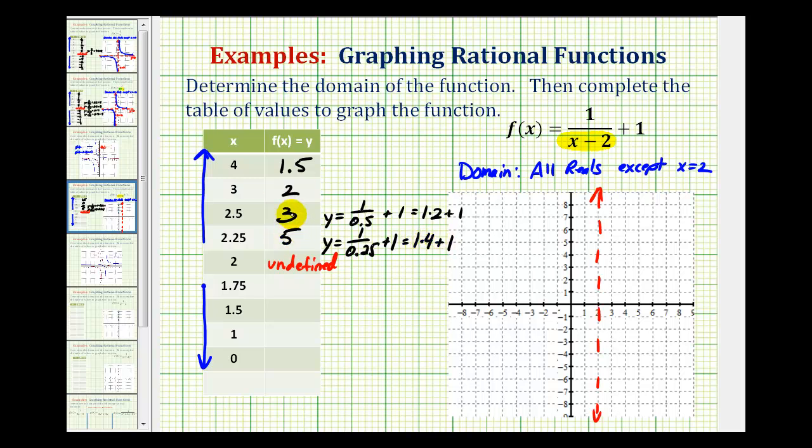And now when x is 1.75, notice how the denominator would be negative 0.25. So we'd have y equals one divided by negative 0.25 plus one. This would be one divided by negative one-fourth, or one times negative four plus one, which would be negative four plus one is negative three.